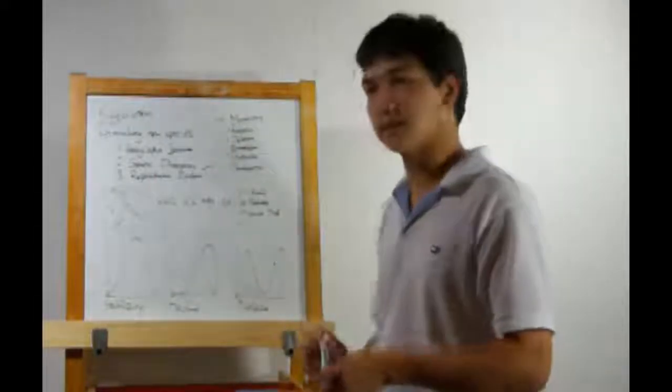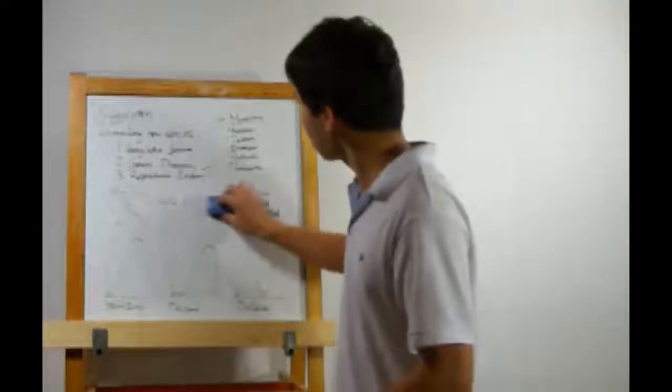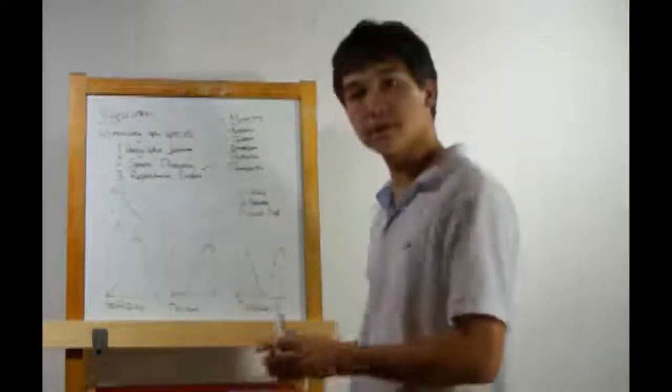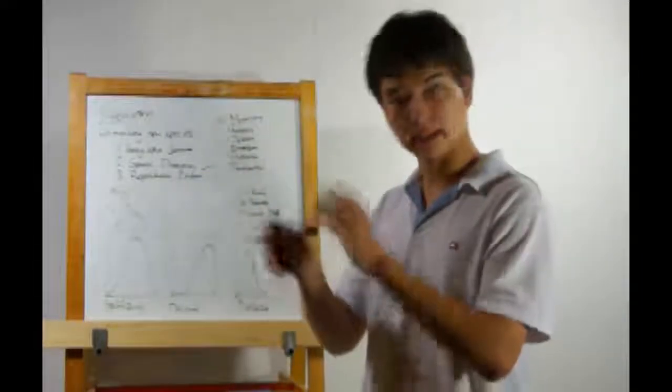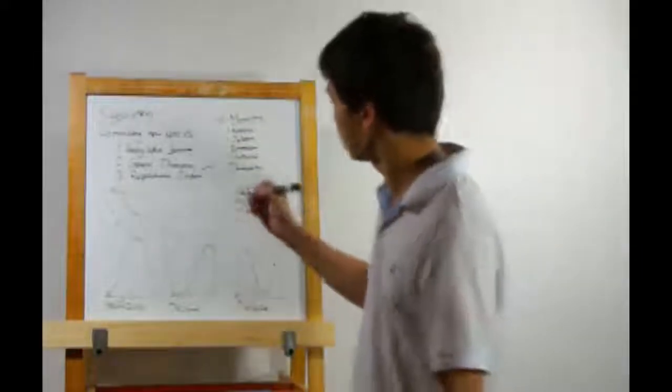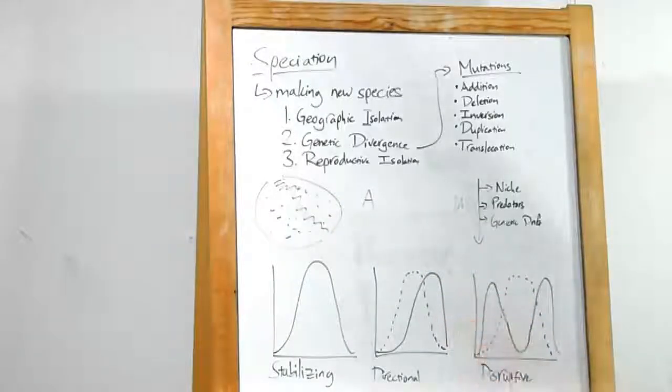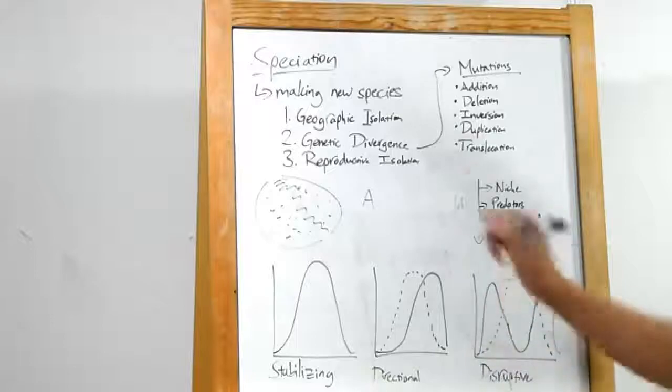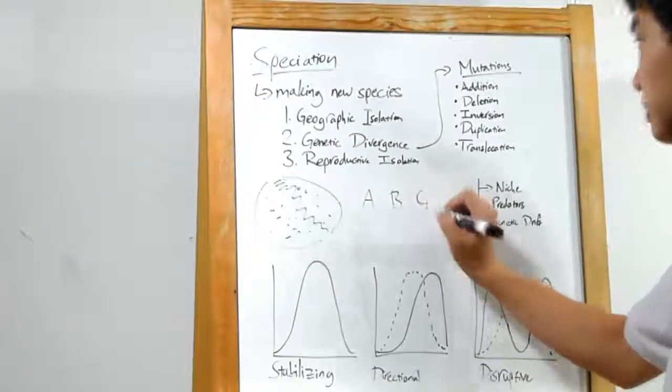Likewise, if I deleted one of the bases, a deletion, we'd have to shift the reading frame in the other direction. This changes every single amino acid following that particular frameshift mutation. Usually, these are fatal. The other types, I'm going to zoom out and take a look at long genetic sequences. Let's say we have a genetic sequence represented by the letter A. Lots of A's, T's, C's, G's, whatever. Another one B, another one C.